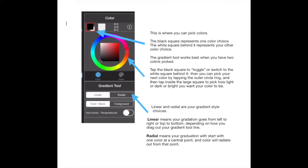The gradient tool has two options: linear and radial. In linear mode, your gradation will go from left to right or top to bottom depending on how you drag out your gradient line. In radial mode, your gradation starts with one color at a center point and color radiates out around that point like a circular glow.